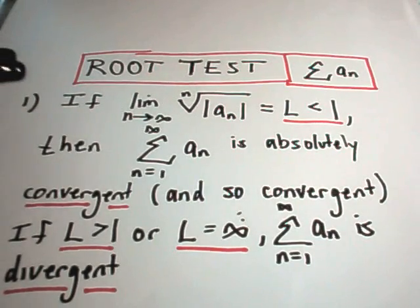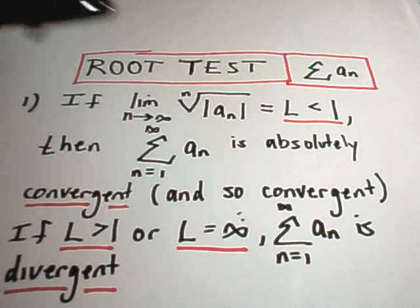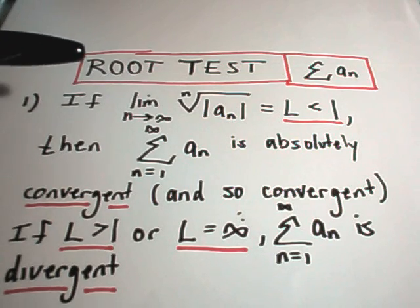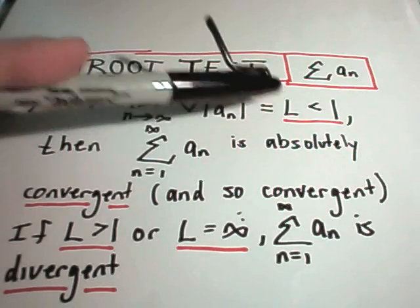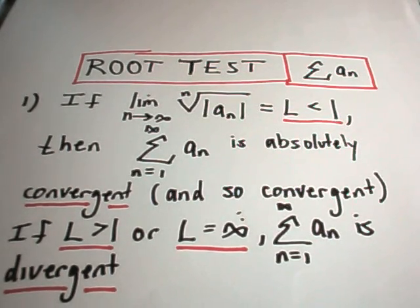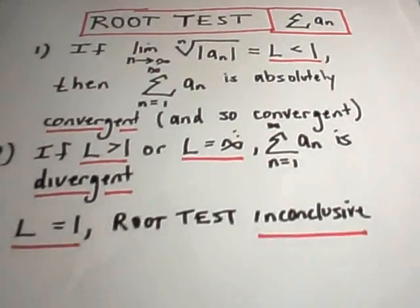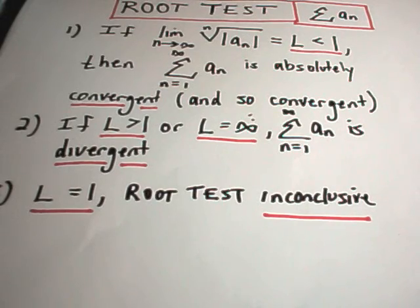Absolute convergence implies convergence. So you can still use this test to show whether a series diverges or converges. So let's suppose our terms inside the series, we'll call those little a sub n. It basically says you take the nth root of the absolute value of that stuff and then take the limit as n goes to infinity. If the limit's smaller than 1, it's absolutely convergent. If this limit is bigger than 1, the series is divergent. And if the limit equals 1, the root test is inconclusive.